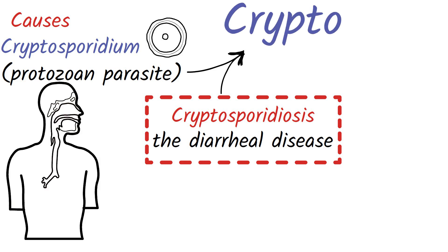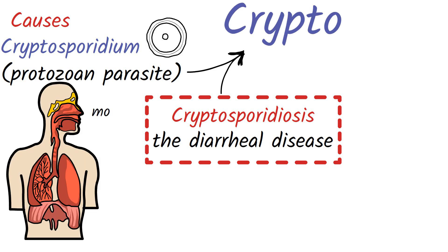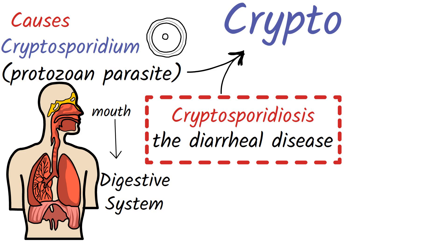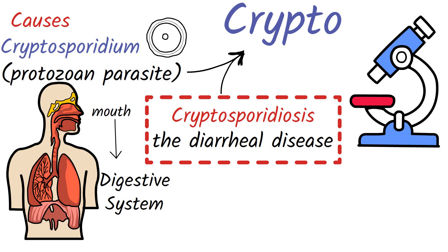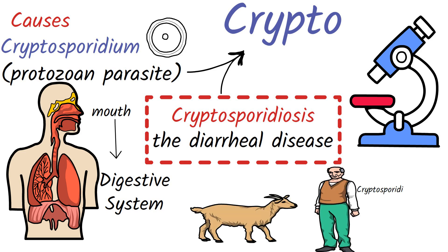Cryptosporidium passes through your mouth into your digestive system, where it reproduces and causes symptoms. It is a single-celled organism that is only visible with a microscope. It usually infects animals and humans. Cryptosporidium hominis and Cryptosporidium parvum are the forms of crypto that usually infect people.